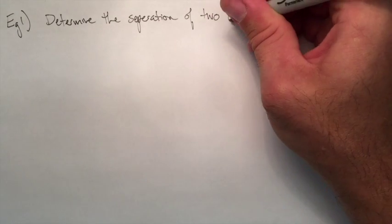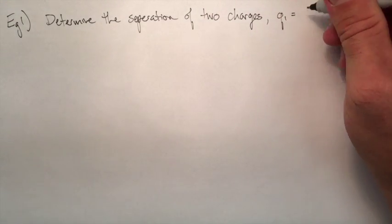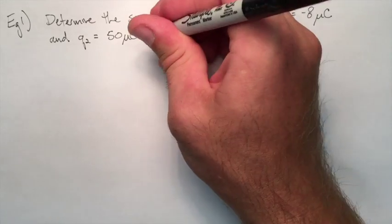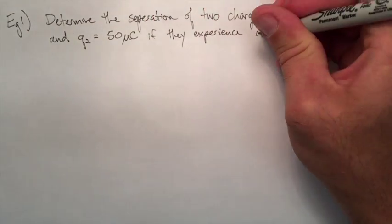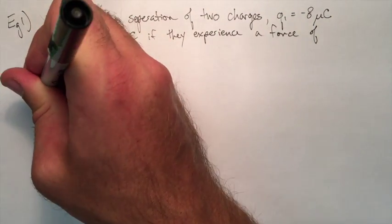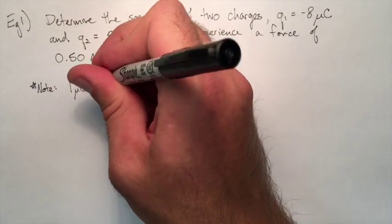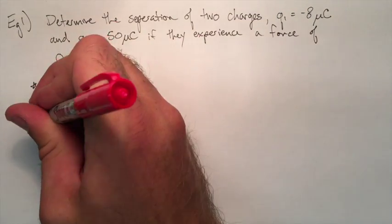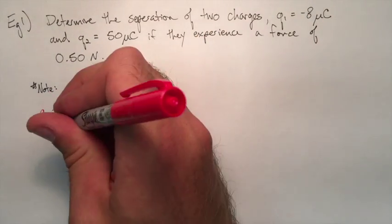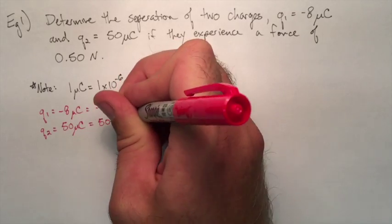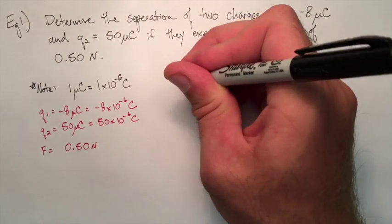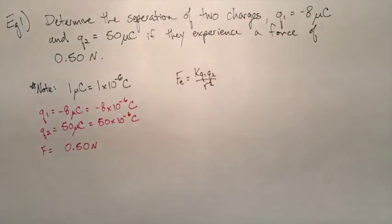Let's do an example here. Let's determine the separation of two charges, where the first charge is negative 8 microcoulombs, and the second charge is positive 50 microcoulombs. Let's say they experience a force of 0.5 Newtons. So one thing we have to note first is we're dealing in microcoulombs. We have to convert that back to coulombs. A microcoulomb is 10 to the negative 6 coulombs. So our first charge ends up being negative 8 times 10 to the negative 6 coulombs, and our second charge ends up being 50 times 10 to the negative 6 coulombs. So we did those conversions, and we also remember we're given a force. So let's use Coulomb's law here, rearrange the equation for a radius, and solve for what we need.